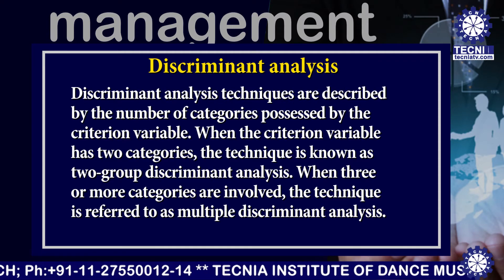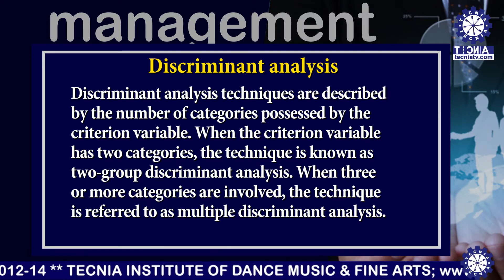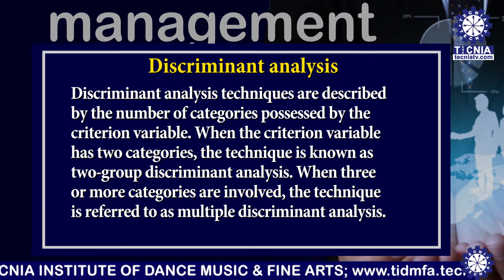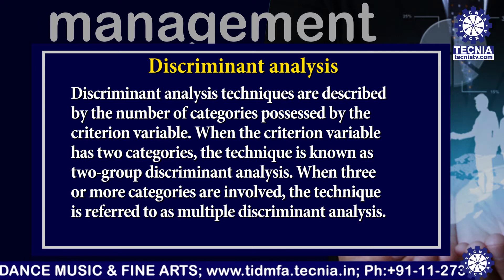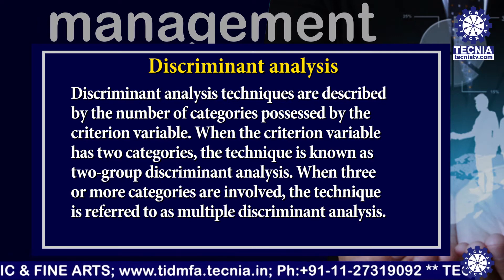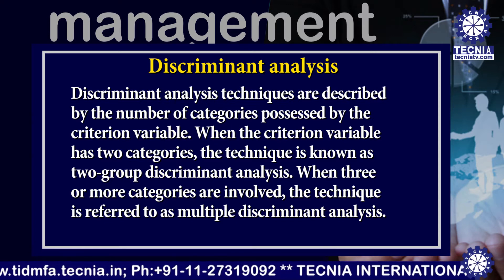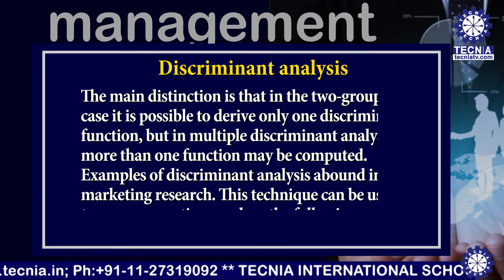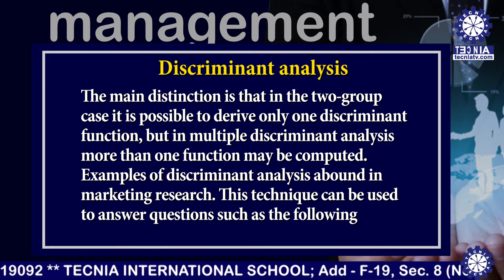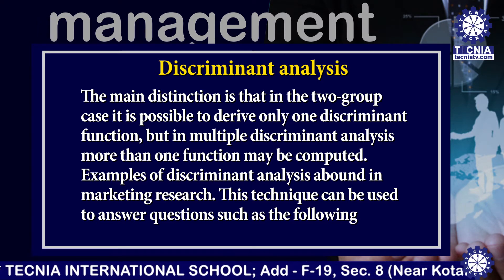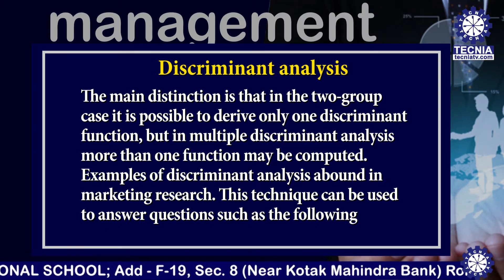Discriminant analysis techniques are described by the number of categories possessed by the criteria variable. When the criteria variable has two categories, the technique is known as two-group discriminant analysis. When three or more categories are involved, the technique is referred to as multiple discriminant analysis. The main distinction is that in the two-group case it is possible to derive only one discriminant function, but in multiple discriminant analysis more than one function may be computed.